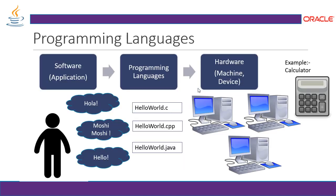So let's see what is a programming language. When we say about an application, it contains software, a programming language, and hardware — that's a machine. Software is written in different scripts, and these scripts can be translated for different machines. This is what the programming language is all about.